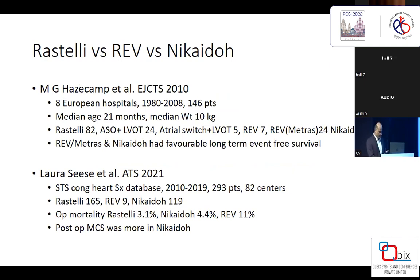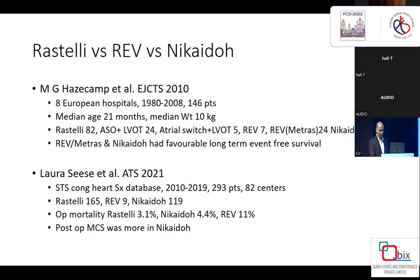Regarding geographical preferences: looking at the European Congenital Heart Surgeons study, Rastelli is still number one, followed by REV or its matrix modification using a piece of aorta to augment the main pulmonary artery; Nikaido is less common. In the STS data, Rastelli is preferred followed by Nikaido, with REV done in smaller numbers. One important point from STS data is that Nikaido and root transfer procedures, being highly complex operations with long cross-clamp and CPB times, have a higher need for post-operative circulatory support.